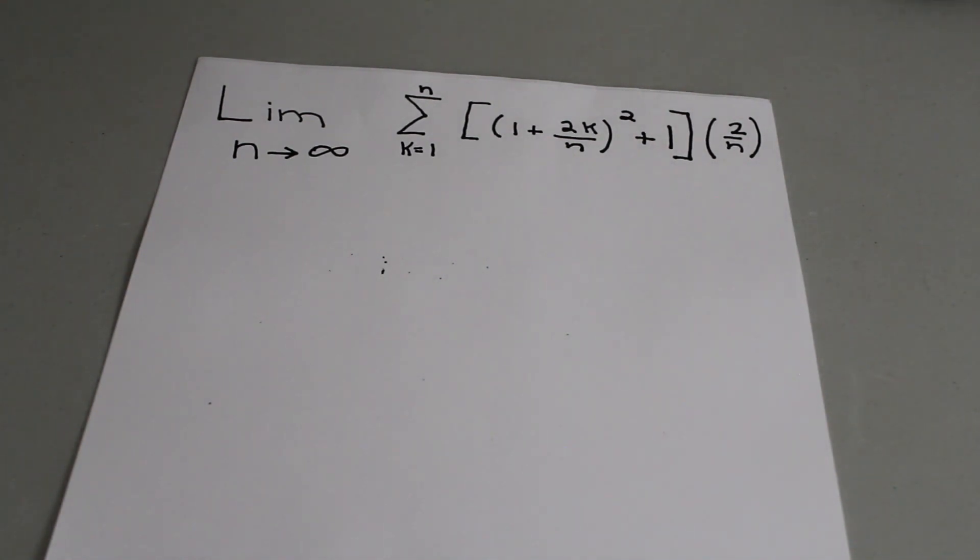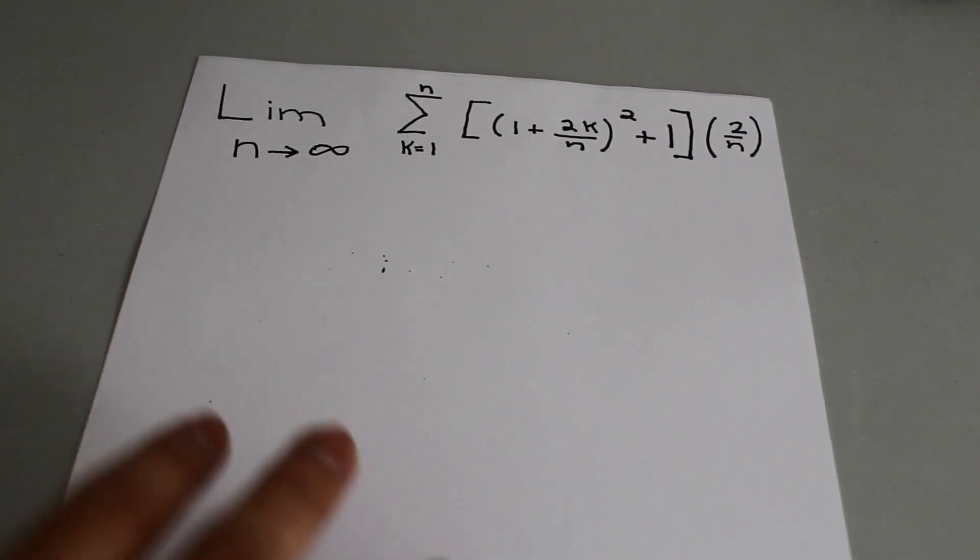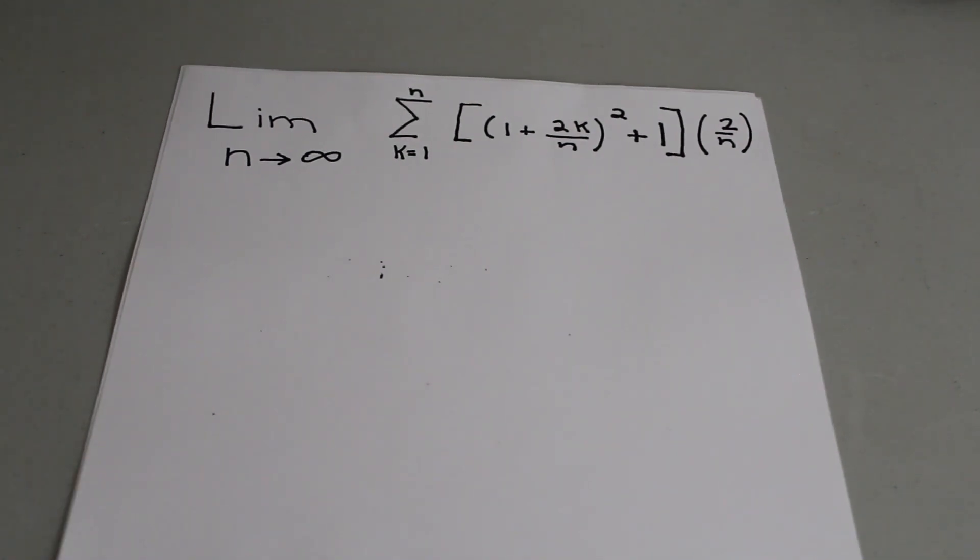limit as n approaches infinity, sum as k goes from 1 to n of 1 plus 2k over n squared plus 1 times 2 over n.